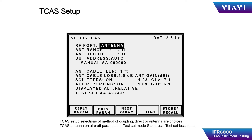Select a suitable location for the test set antenna so that the aircraft TCAS antenna has a clear line of sight view and is free from obstructions that will cause RF reflections.